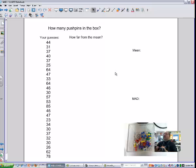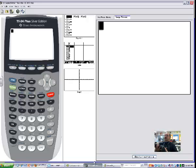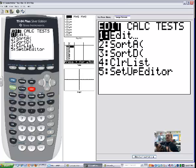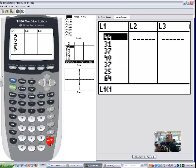So it doesn't really matter what the guesses are. What we need to know is what's the mean of those numbers. We're going to use the technology, the TI-84 plus on here, but the same thing as your 83s. What I've done is I've taken that list of data that you have and I've entered it into my stat editor. I've got them all listed in there, the same list of data.